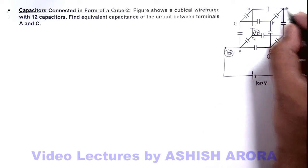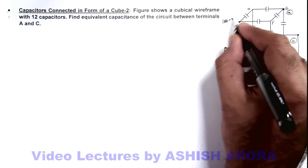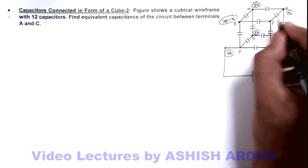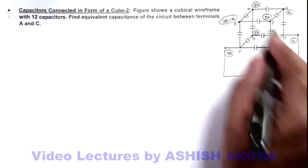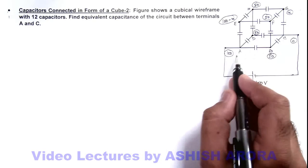If at node G potential is taken as x, by symmetry at E it'll be 100 minus x. Similarly, again at points F and H potential can be taken as 50 and 50, because they are at same distance or same separation from zero and 100 volt.